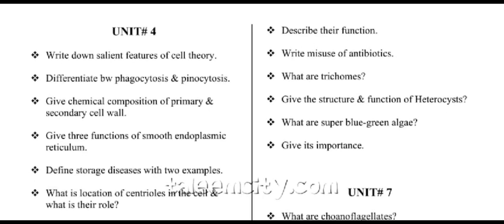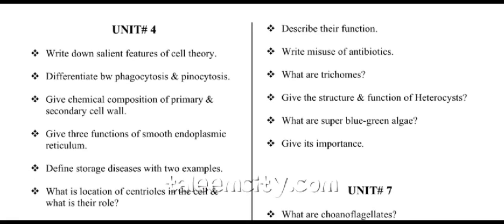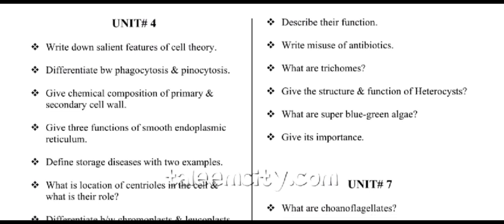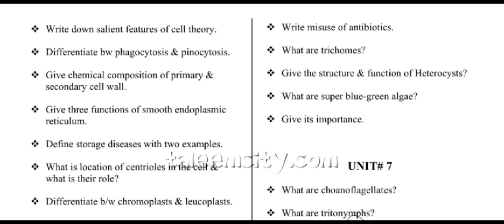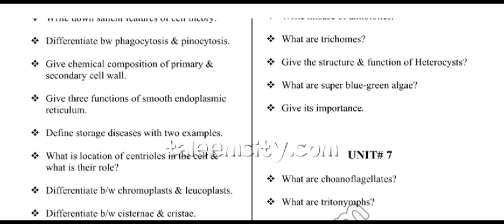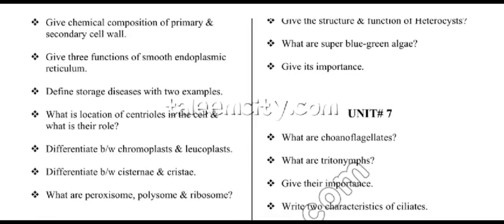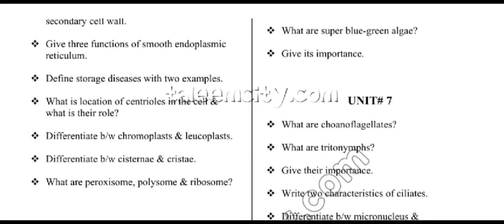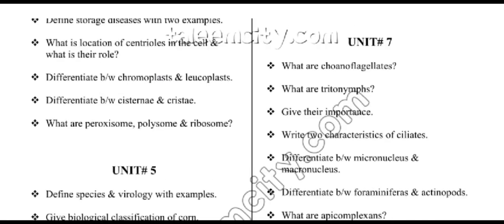From unit number four, we have: write down salient features of cell theory; differentiate between phagocytosis and pinocytosis; give chemical composition of primary and secondary cell wall; three functions of smooth endoplasmic reticulum; storage diseases with two examples; location of centrioles in the cell and their role; differentiate between chromoplast and leucoplast; differentiate between cisternae and cristae; what are peroxisomes, polysomes and ribosomes.